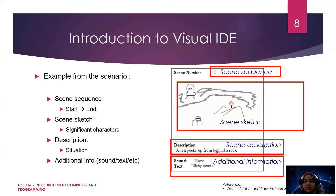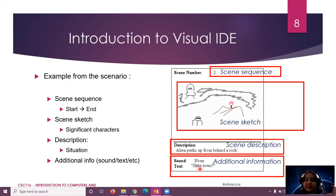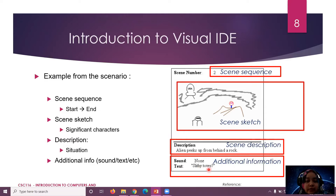After sketching, we need a scene description — for example, 'Ellen picks up from behind rock.' Then there is additional information such as sound: do you want space machine sounds? That is up to you, this is your story. Also, is there any text or dialogue in the scene? For example, is a character speaking? These are examples of the additional info: sound, text, and so on.